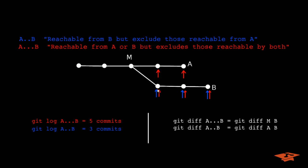In the git log sense, what that means is that git log A triple dot B is five commits and git log A double dot B is three commits. So this is confusing enough as it is in my opinion. But because git is git, the double dot and triple dot notation is different in diff versus log.